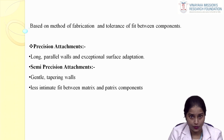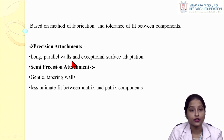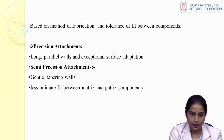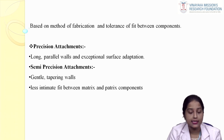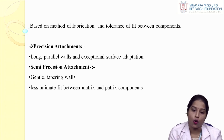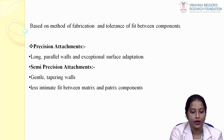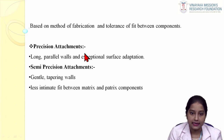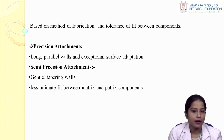In precision attachment, since we have long parallel walls, there is intimate contact between the matrix and patrix, so all forces are transferred to the tooth. In distal extension cases or teeth with compromised periodontium where we don't want to concentrate all force on the teeth, we use semi-precision attachments. Most intracoronal attachments are precision attachments, and all prefabricated attachments are precision attachments, whereas lab-made or custom-made attachments are semi-precision attachments.